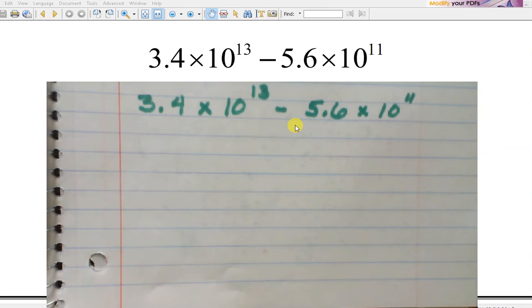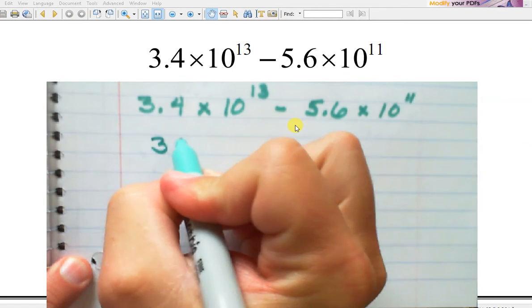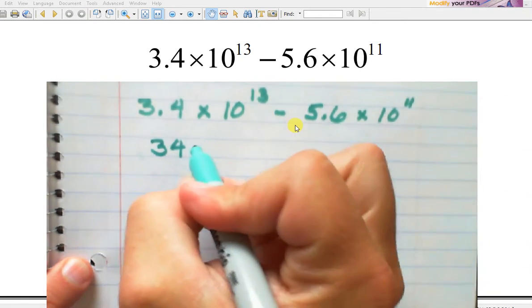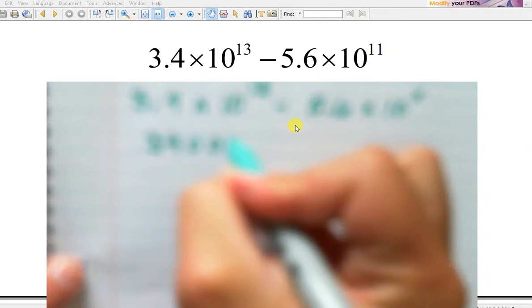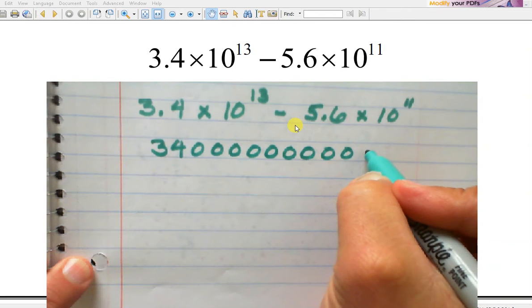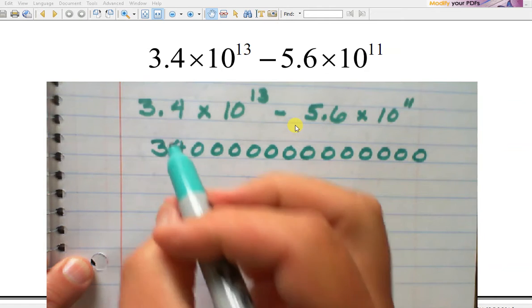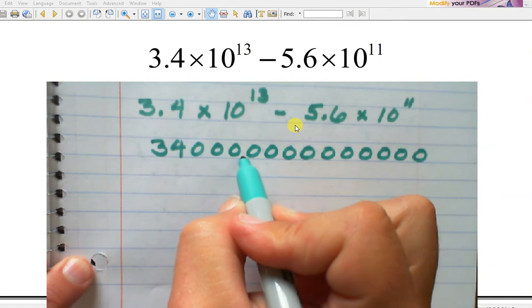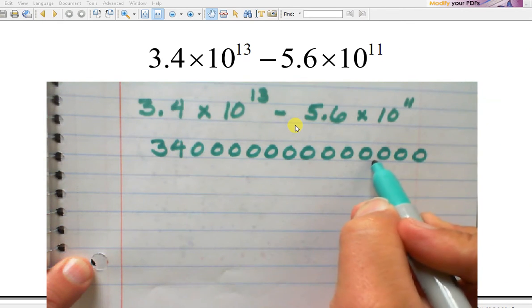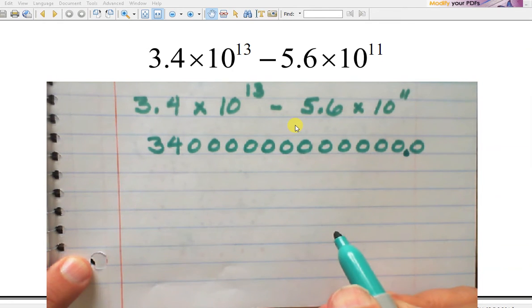I'm going to take both of these and put them out of scientific notation. So this is going to be 3, 4, with how many zeros? 13 zeros. And how many jumps? 13 jumps. 1, 2, 3, 4, 5, 6, 7, 8, 9, 10, 11, 12, 13 jumps.